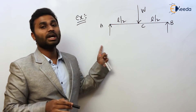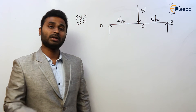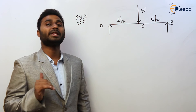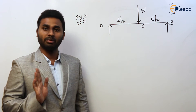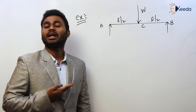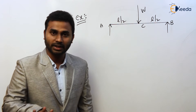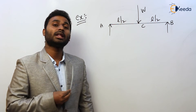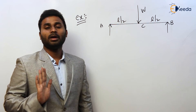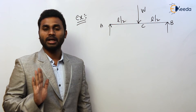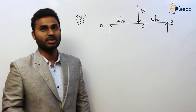In this case we have to calculate the plastic hinge length. The first step is to immediately draw the bending moment diagram. If we are familiar with the concepts of strength of materials, then we can draw the bending moment diagram very clearly without any error and with ease.